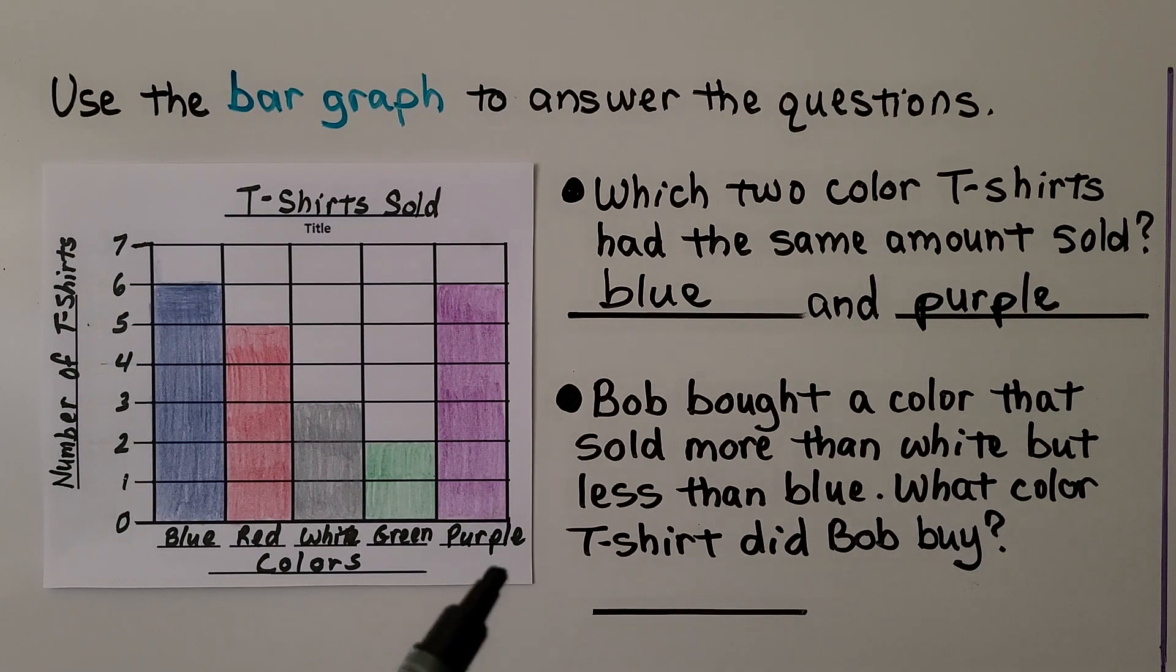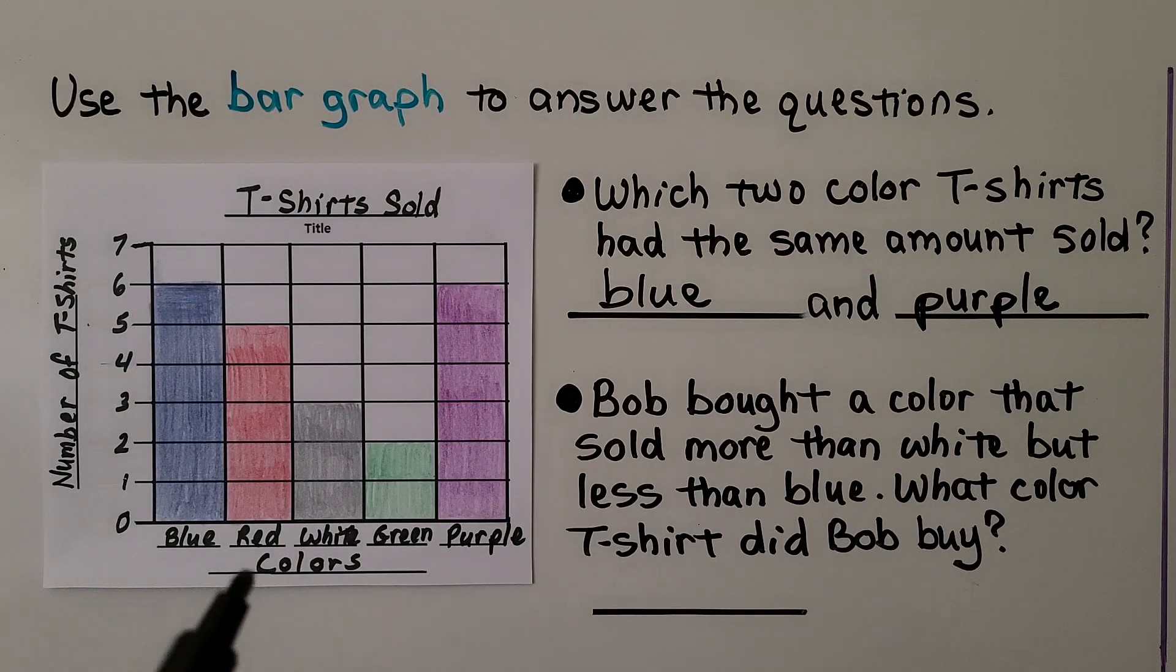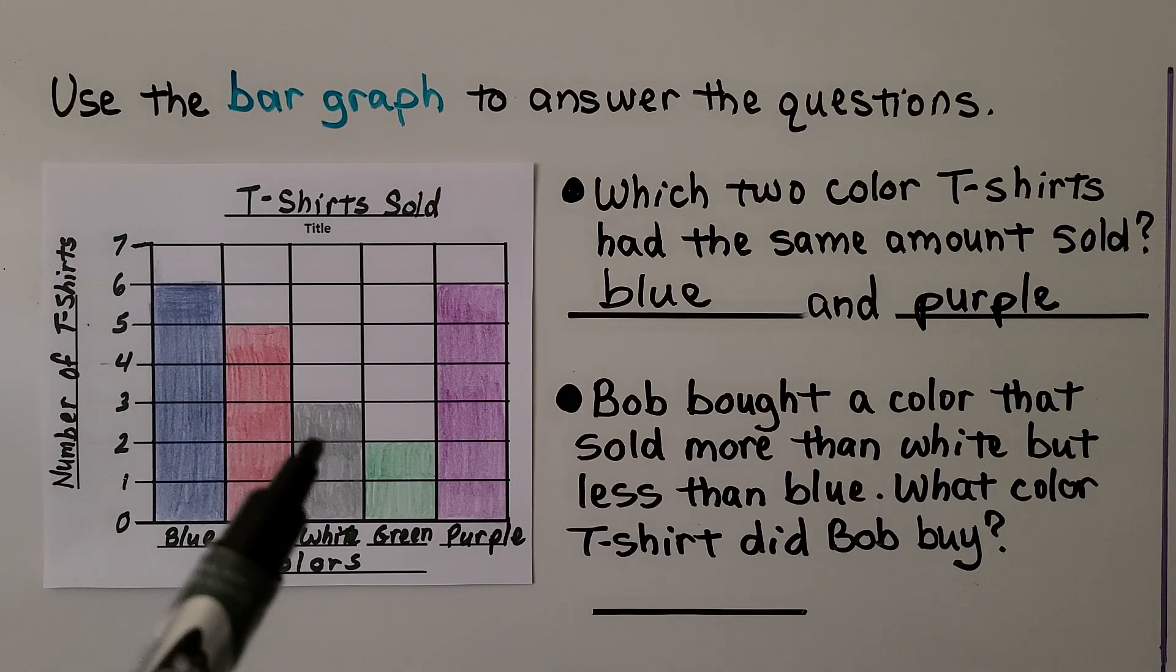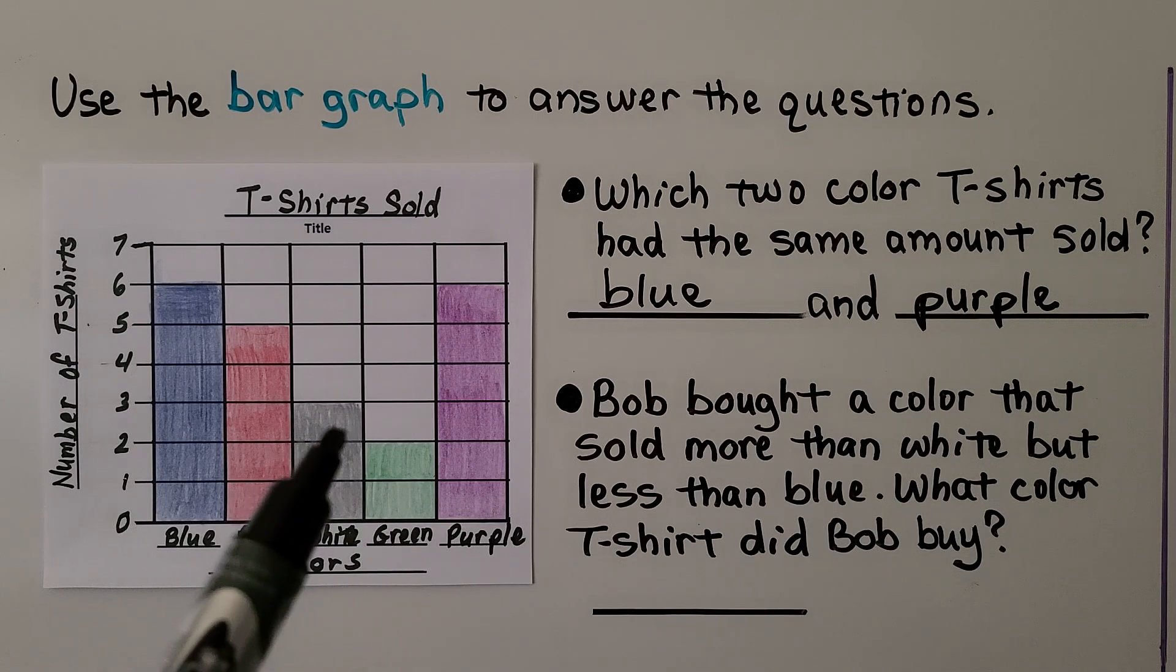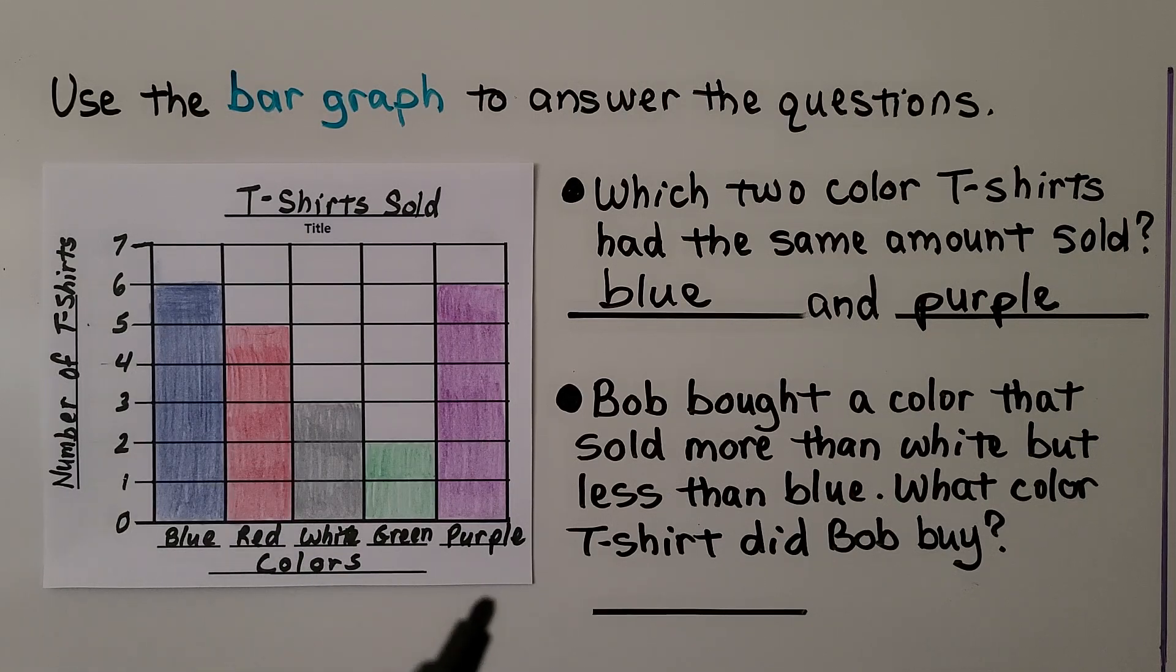Now this one here says Bob bought a color that sold more than white, but less than blue. What color t-shirt did Bob buy? So we look at which ones sold more than white. Well, the only one that didn't sell more than white was green. So it could be any one of these, but it says less than blue.